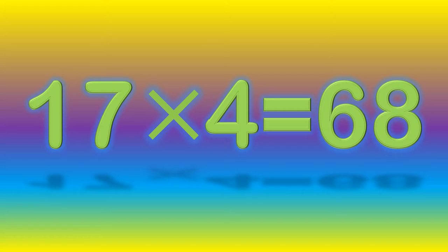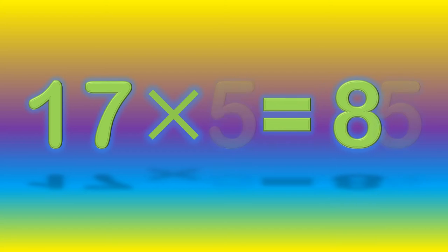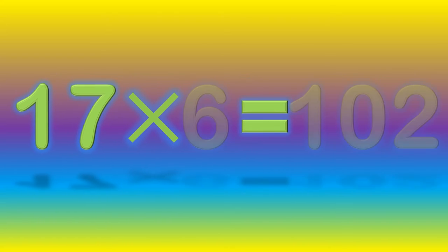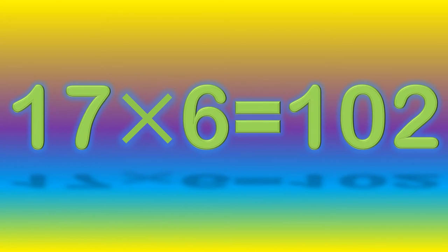17 fours are 68. 17 fives are 85. 17 sixes are 102.